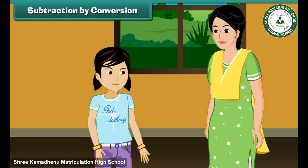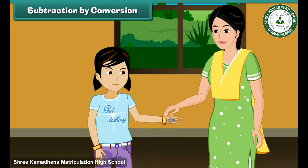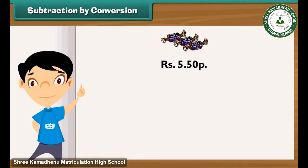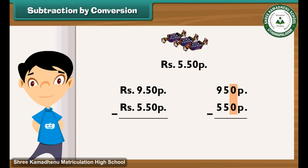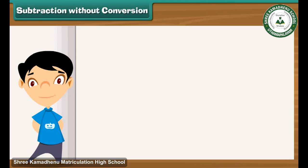Subtraction by conversion: Raveena gets 9 rupees 50 paise from her mother as pocket money. She spends 5 rupees 50 paise on toffees. What is the pocket money left with her? 9 rupees 50 paise means 950 paise and 5 rupees 50 paise means 550 paise. Write 550 paise under 950 paise and subtract: 0 minus 0 is 0, 5 minus 5 is 0, and 9 minus 5 is 4. So the amount left with Raveena is 400 paise, that is 4 rupees.